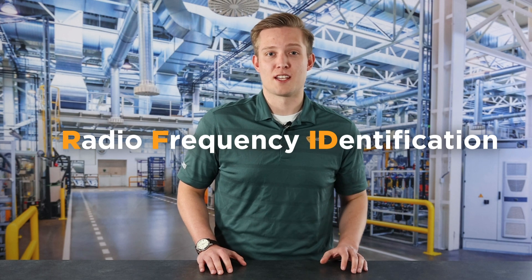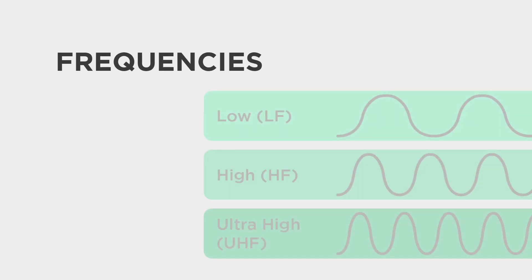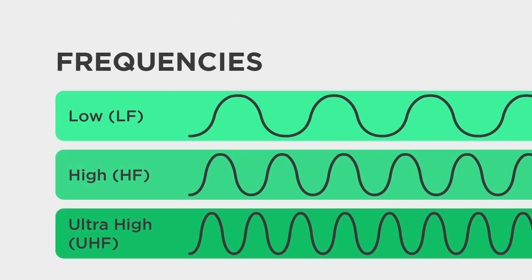Now that we've covered the common applications for RFID, let's dive into the technology itself. RFID stands for radio frequency identification. In the industrial automation world there are three frequency ranges used. It is important for us to understand the uses and differences between those three ranges so we select the right hardware for the application. Those three frequency ranges are low frequency, high frequency, and ultra high frequency.